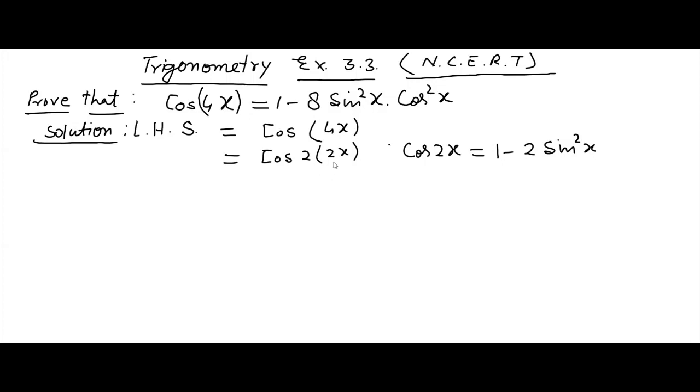But here in place of x you have 2x, so this may be written as 1 minus 2 sin²2x, applying this formula here. Now 1 minus 2 sin²2x may be written as sin 2x only square.